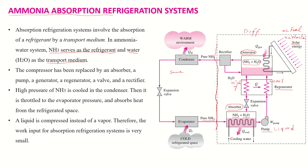After passing through the expansion valve, the ammonia vapor and liquid mixture is passed through the evaporator. In the evaporator, heat is absorbed from the refrigerated space and cooling is produced. After passing through the evaporator, the ammonia is completely converted into vapor form, and the cycle starts again from the absorber.